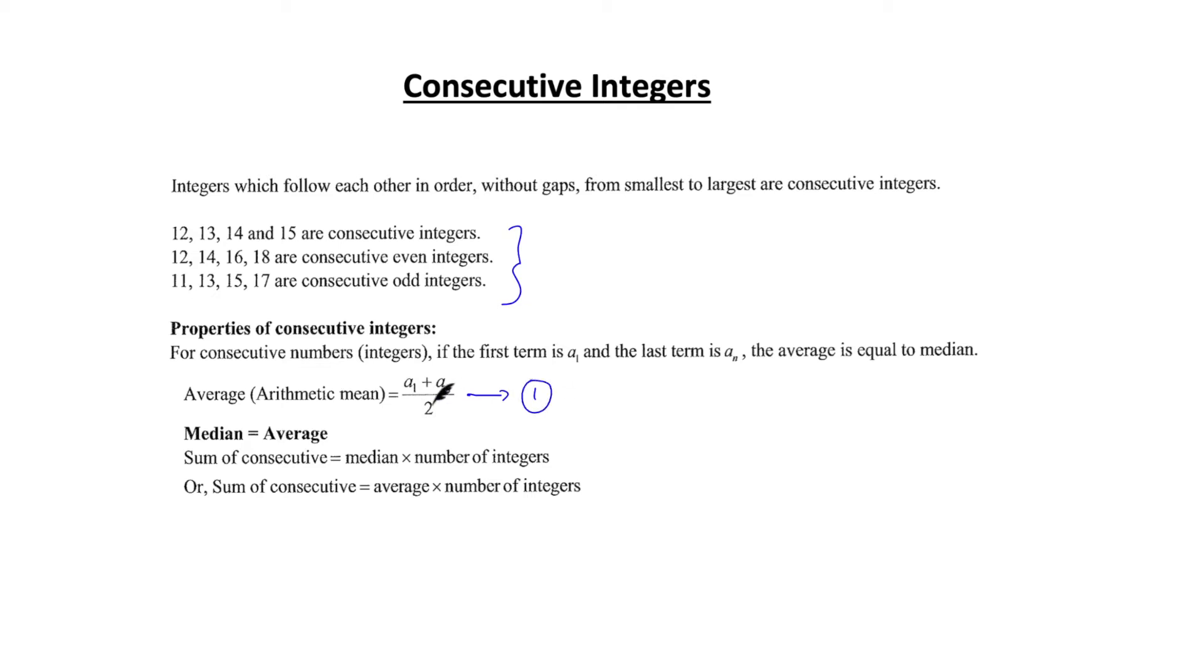The first thing you should remember is that the average of consecutive integers is first term plus last term divided by 2. So if we have this series, the average should be 12 plus 15 divided by 2, which in this scenario is 13.5. Similarly the average of this series will be 11 plus 17 divided by 2.